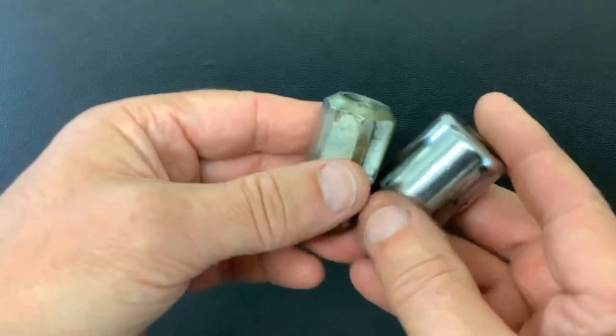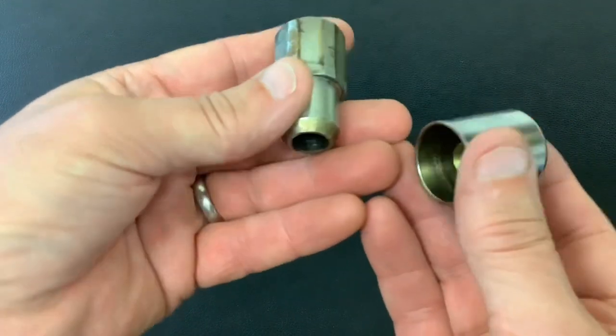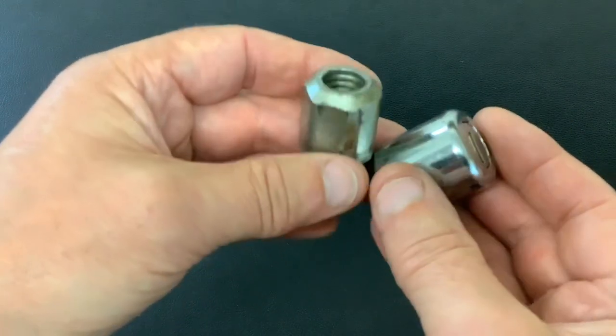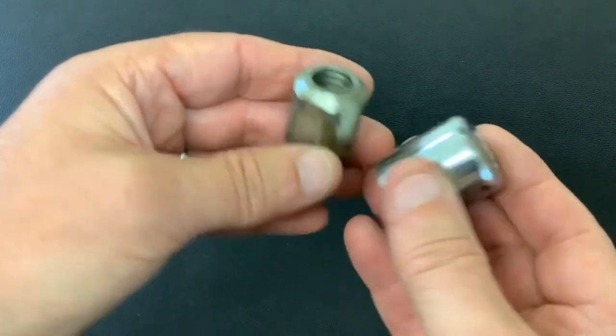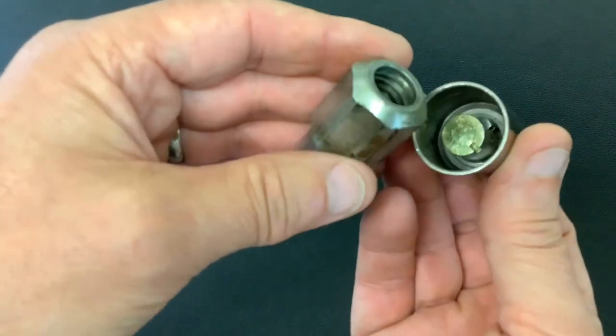I picked open this car wheel locking nut the other day on a YouTube short video, and you only get 60 seconds, so I picked it open but I didn't actually show you what's going on inside the lock. Roy Sammons commented and asked could I explain what's going on. Well, rather than mess about sending messages trying to explain what's happening, I thought I'd do a quick video to show you.